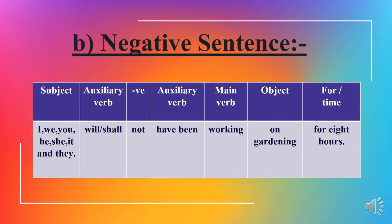Now we will discuss the negative construction of sentences. Apply subject in the beginning, then apply first auxiliary verb — will or shall. After that apply 'not,' then apply second auxiliary verb 'have been.' After that apply the main verb as first form of the verb with -ing such as 'working,' then apply object such as 'gardening,' then apply 'for' and time such as 'for eight hours.'